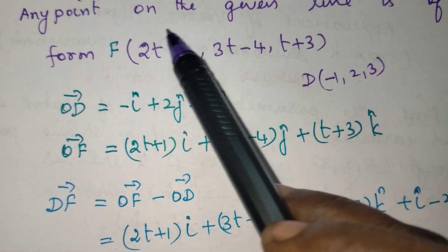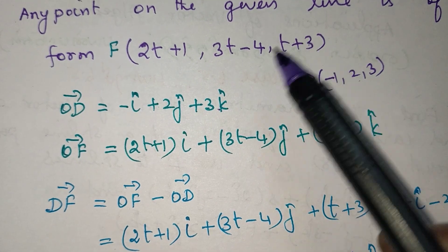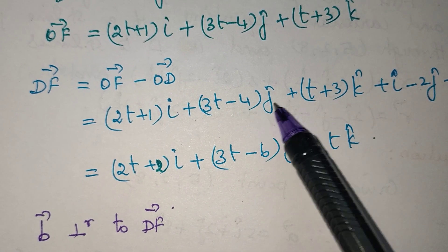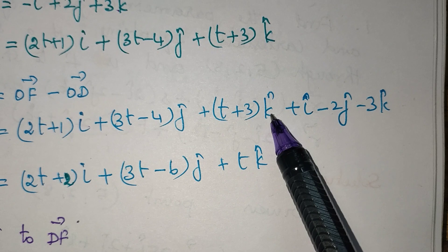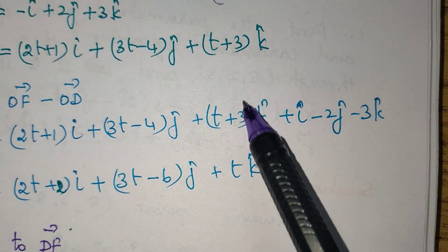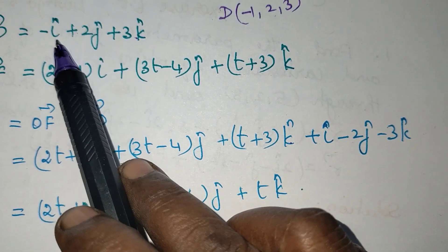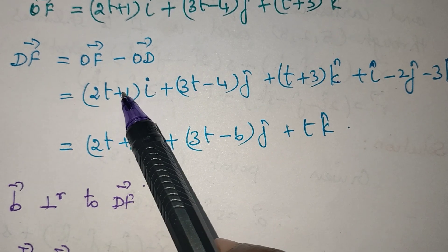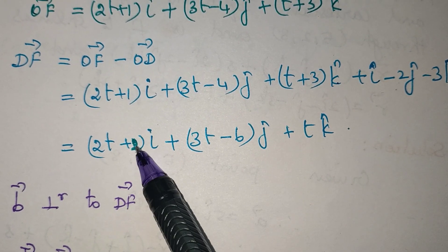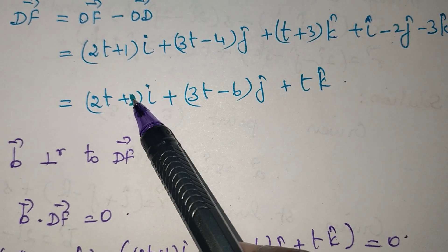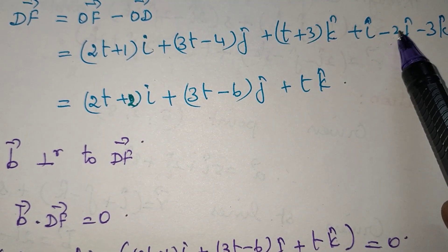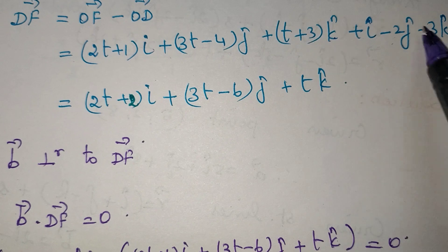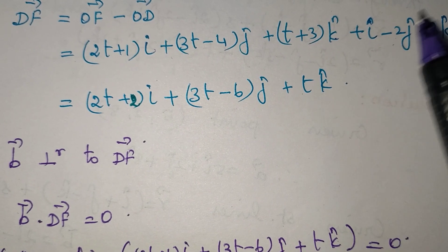The OF vector has x, y, z coordinates in i, j, k: (2t + 1)i + (3t - 4)j + (t + 3)k. The DF vector components are: (2t + 1) - 1 = 2t + 2 for i; (3t - 4) - (-2) = 3t - 6 for j; and (t + 3) - 3 = t for k.